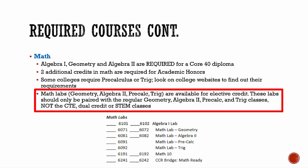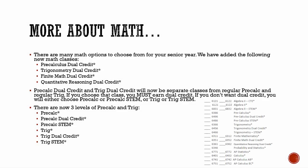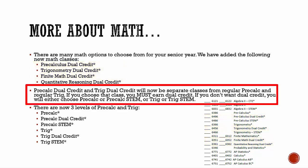You must be concurrently enrolled in the specific math classes to take those labs. The labs are only for regular geometry, algebra 2, and pre-calc trig — not the STEM or dual credit versions. You have several options when it comes to math classes for your senior year. New math classes include pre-calculus dual credit, trigonometry dual credit, finite dual credit, and quantitative reasoning dual credit. Pre-calc dual credit and trig dual credit will now be separate classes from regular pre-calc and trig, so if you choose these, you must earn dual credit. If you do not want the dual credit for pre-calc or trig, then choose regular pre-calc trig or pre-calc STEM and trig STEM.